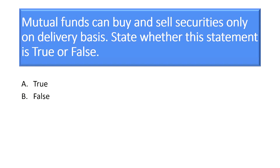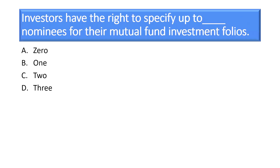Question 4: Mutual funds can buy and sell securities only on a delivery basis. State whether true or false. A. True. B. False. Correct answer: A — True. Mutual funds are bound to purchase and sell securities only on delivery basis; they cannot do intraday trading. Question 5: Investors have the right to specify up to how many nominees for their mutual fund investment folios? A. 0. B. 1. C. 2. D. 3. Correct answer: D — 3. Investors can specify up to 3 nominees for their mutual fund investment folios.